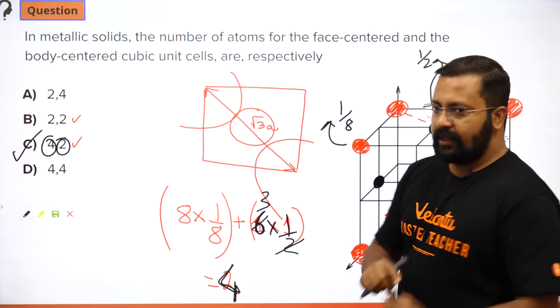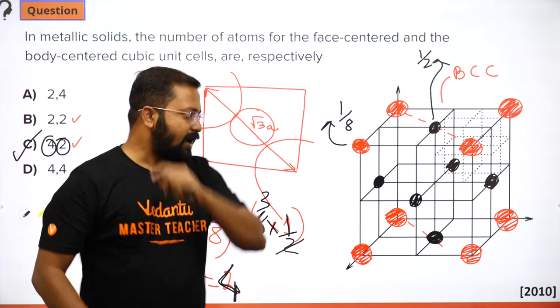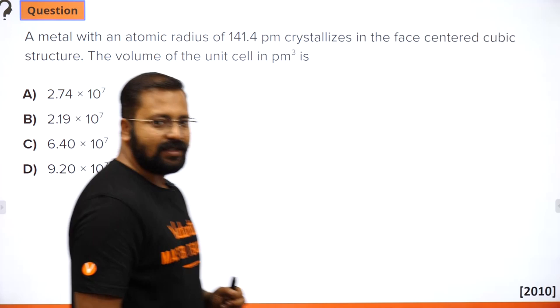Very easy question. The important awareness here is that in a face-centered cubic unit cell, the point of contact is along the face diagonal. Take a face and a corner — the corner atom is in contact with the face-center atom, which is in contact with the next corner atom, all along the face diagonal.